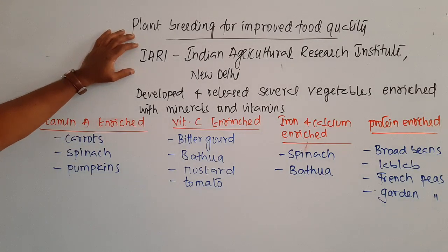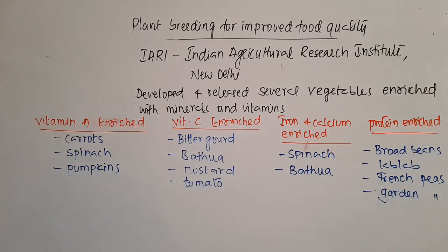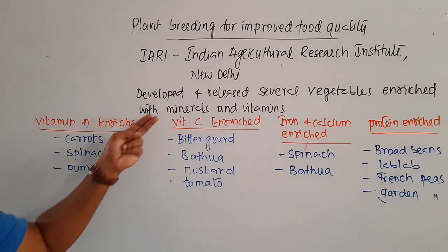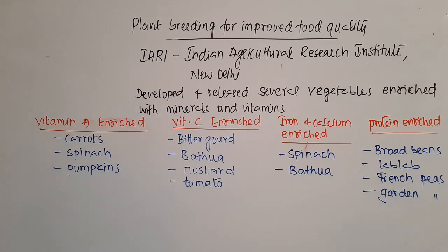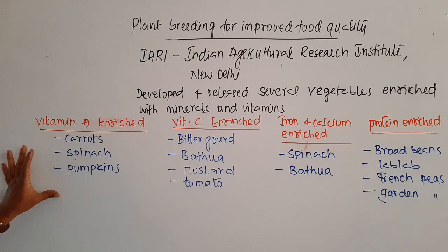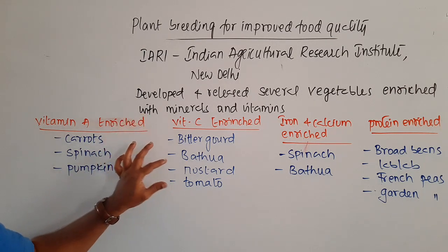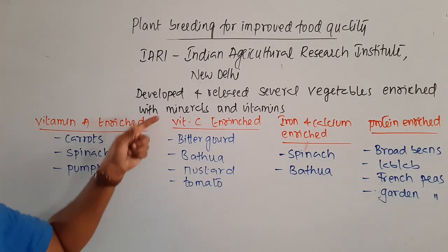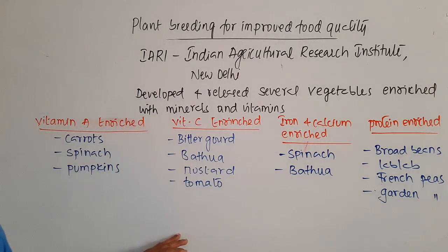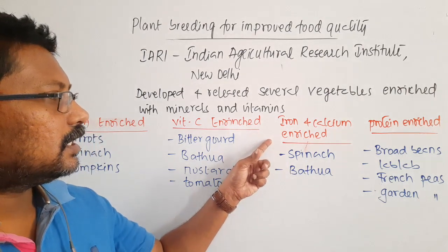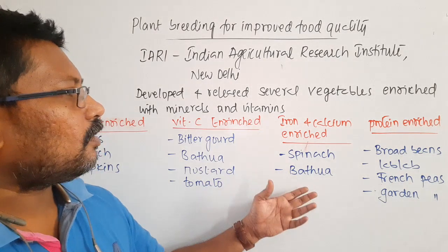The IARI (Indian Agricultural Research Institute) located in New Delhi developed and released several vegetables enriched with minerals and vitamins. Examples include vitamin A enriched carrots, spinach, and pumpkins; vitamin C enriched vegetables like bitter gourd, bathua (a leafy vegetable), mustard, and tomato; and iron and calcium enriched spinach and bathua, all of which have been released into the market.